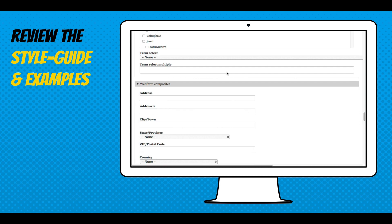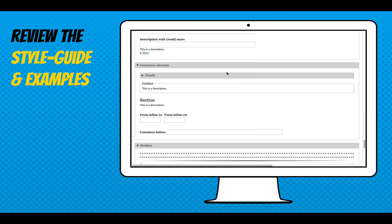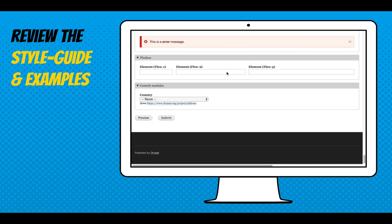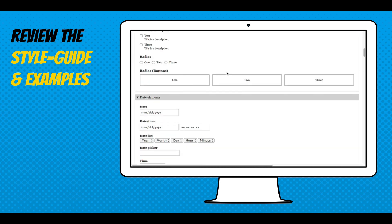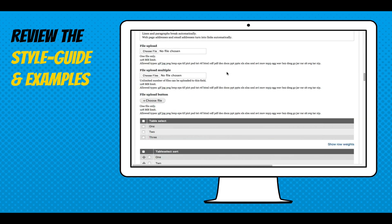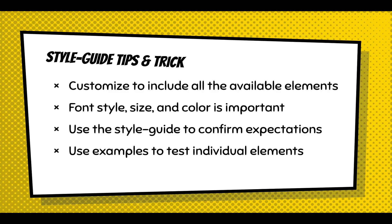To get everyone on the same page, it's important to have a style guide. The Web Form Module has an examples module which has a style guide — it contains examples of every element so everyone is on the same page. Style guides include all available elements, let you test the font size, style, and color, and confirm expectations — making sure all your design specifications are working.